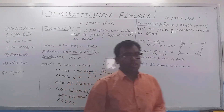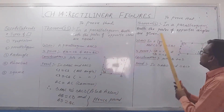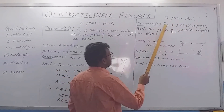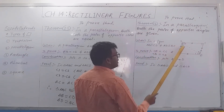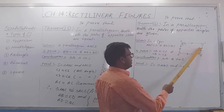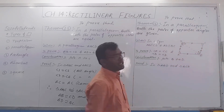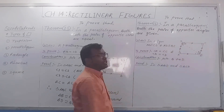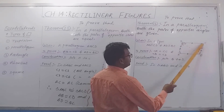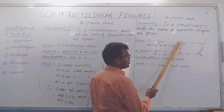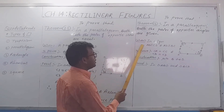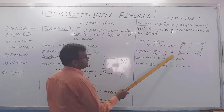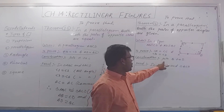This concept is from the congruency of triangles. Now the next theorem is theorem number 12, which is the converse of theorem number 11. Theorem 12: to prove that in a parallelogram, both pairs of opposite angles are equal — that is, angle A equals angle C and angle B equals angle D. Given: ABCD is a parallelogram, so AB is parallel to CD and AD is parallel to BC. Construction: join diagonal BD.